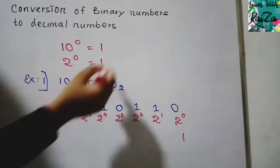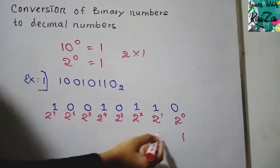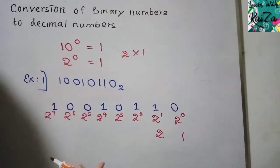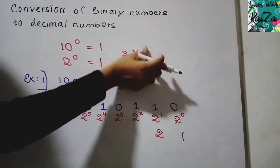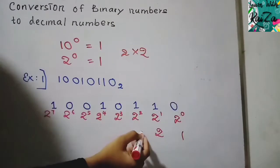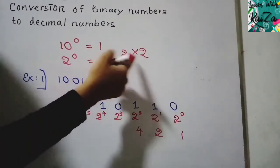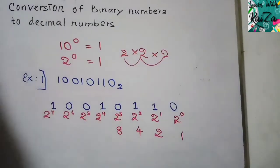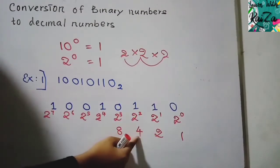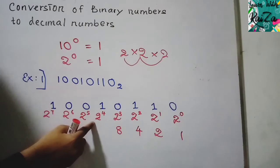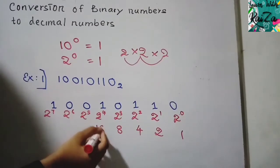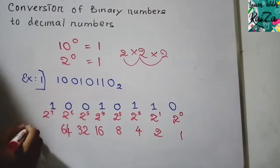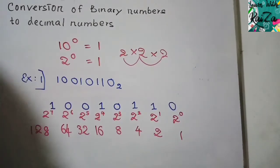The values of these powers are: 2⁰ = 1, 2¹ = 2, 2² = 4, 2³ = 8, 2⁴ = 16, 2⁵ = 32, 2⁶ = 64, 2⁷ = 128. Each power is simply the previous value multiplied by 2.